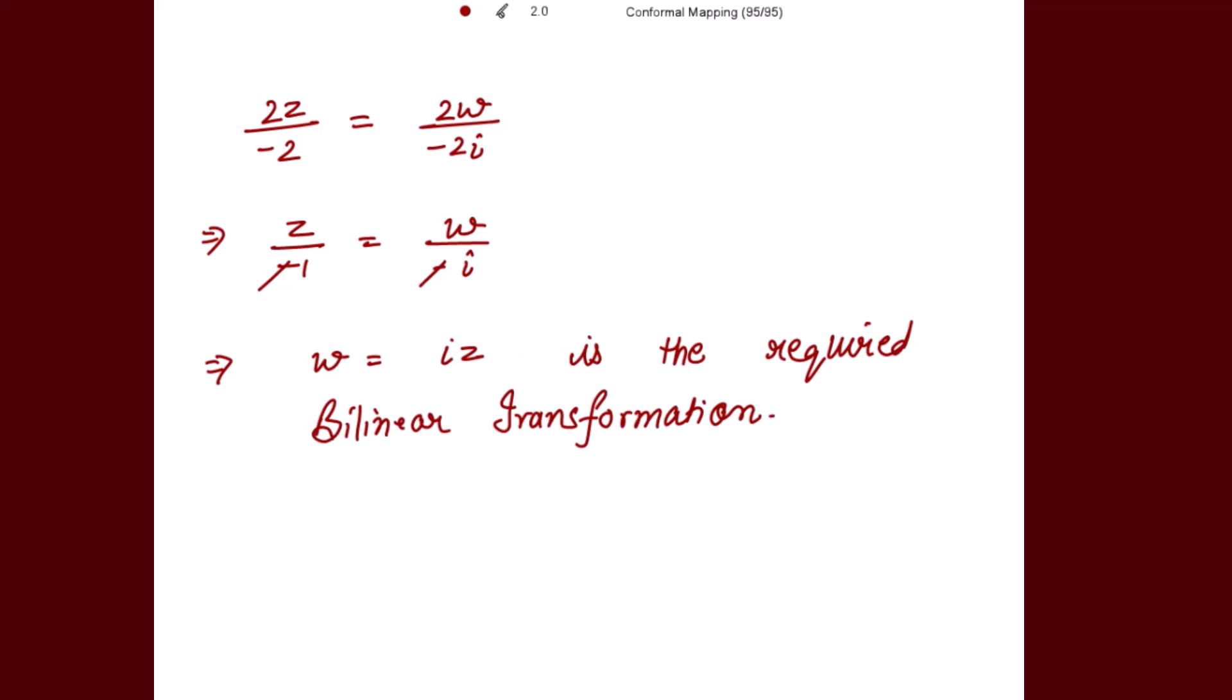This is how we get the bilinear transformation by the cross ratio method. Thank you.